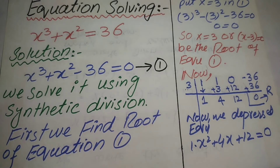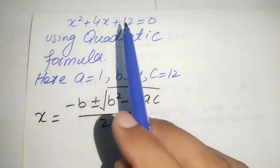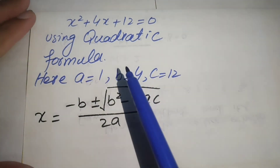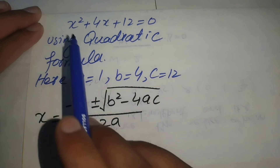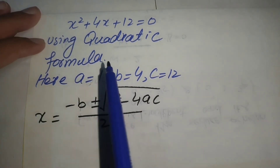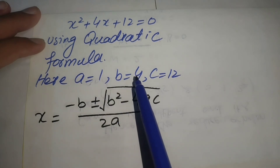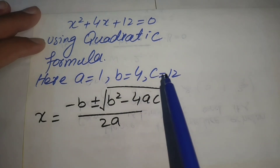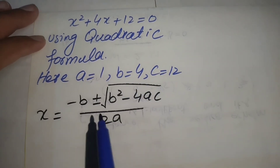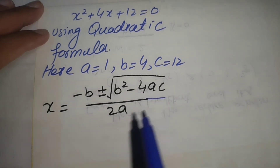We now solve this quadratic equation using the quadratic formula. The coefficient of x² is 1, so a = 1. The coefficient of x is 4, so b = 4. The constant term gives us c = 12. We will substitute all values of a, b, and c into the quadratic formula.